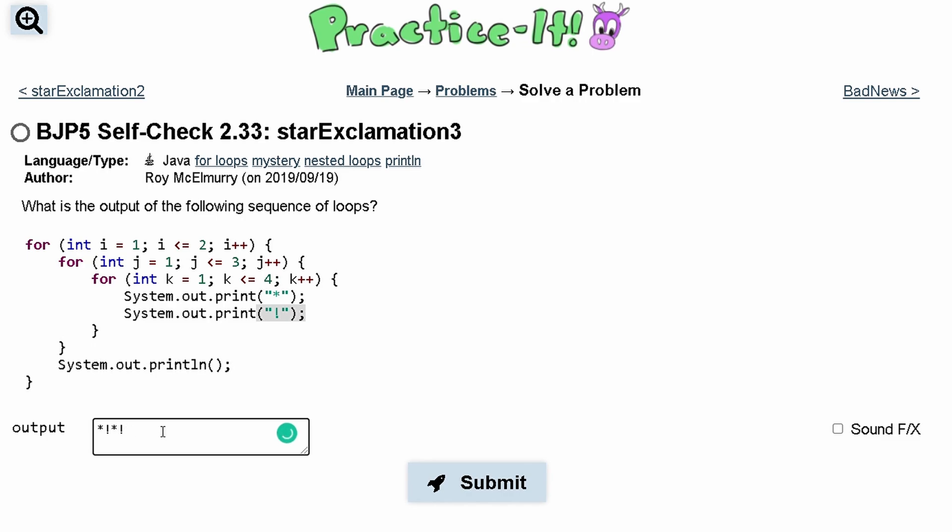Once we have all of these, because k is equal to 1 for this part, then k is equal to 2 for this part, k is equal to 3 for this part, and then k is going to be equal to 4 to get this part. After we have this, we are going to break out of this loop.